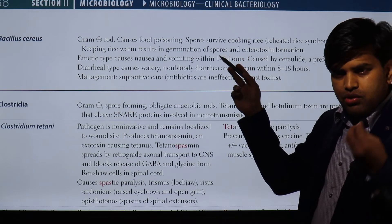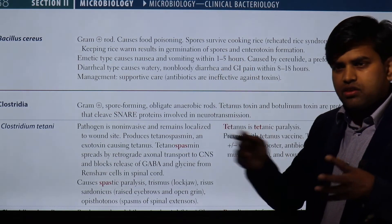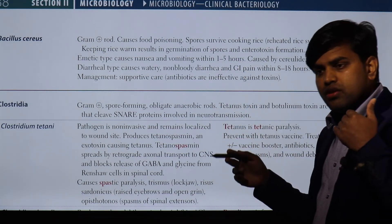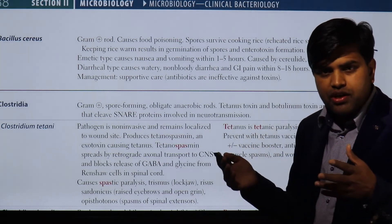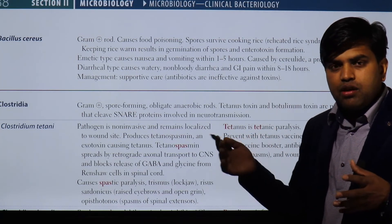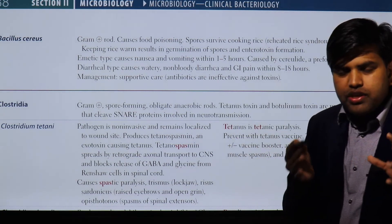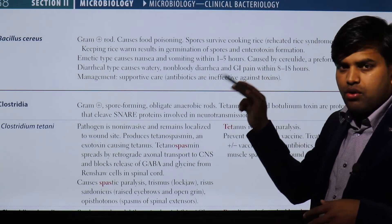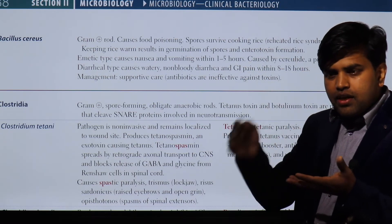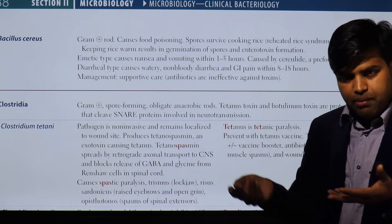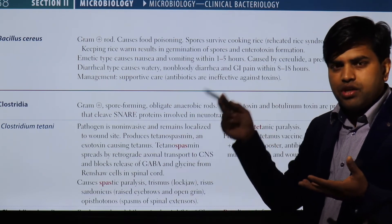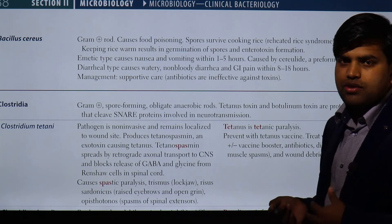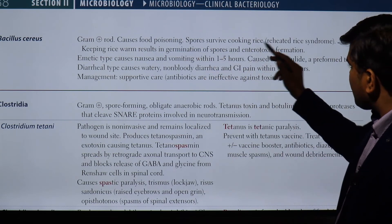The spores of Bacillus cereus survive cooking because ordinary cooking temperatures are insufficient to kill spores. Autoclaving at 121°C for 15 minutes at 15 pounds per square inch of pressure is required to destroy spores — conditions not achieved during regular cooking. When the rice is kept warm or reheated, spores germinate into bacteria, which then release enterotoxin into the food.